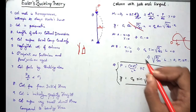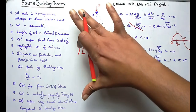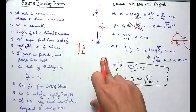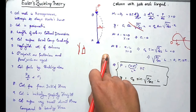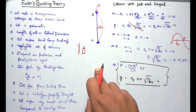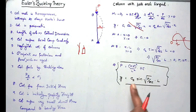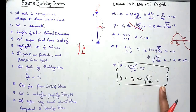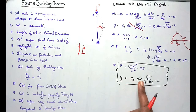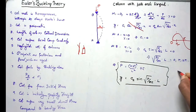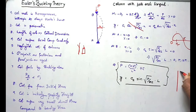The deflection equation is y = C2·sin(√(P/EI)·x). This is very important for Euler's buckling theory. We have set up the differential equation and displacement equation for an idealized column with both ends hinged.